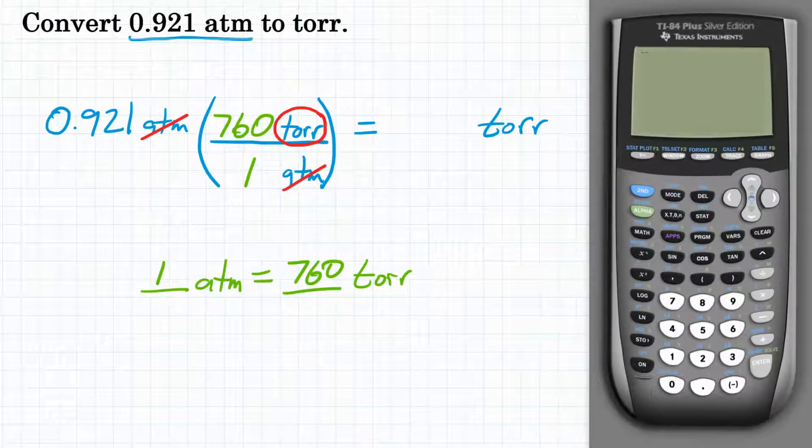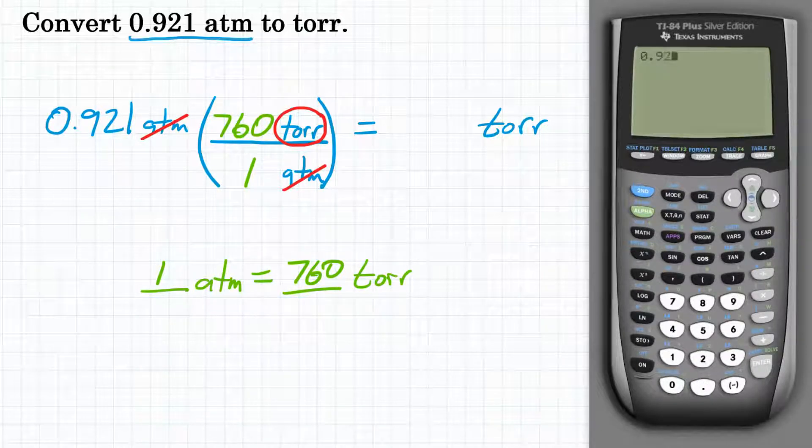We're going to start with 0.921. And since we're multiplying by a fraction, we're multiplying by the top and dividing by the bottom. Though multiplying or dividing by one won't change what we're doing, so we're going to skip the bottom and just multiply by 760.